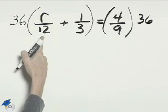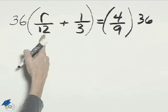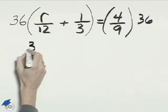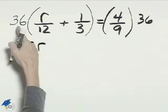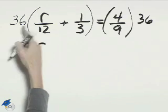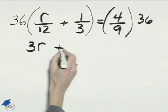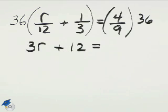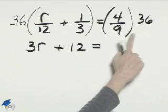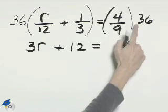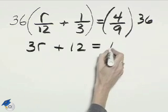36 times R over 12 will become 3 times R, because 12 and 36 will cross-divide, and we'll have 3R. 3 divides into 36 twelve times, so it'll be 12 times 1, and that will give us plus 12. On the right-hand side, 9 divides into 36 four times, so we'll have 4 times 4, which is 16.